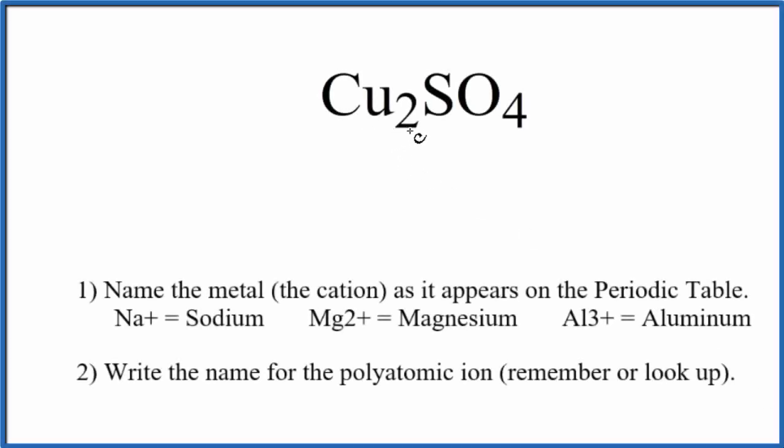To write the name for Cu2SO4, first we need to recognize this SO4 here. This is the sulfate ion. It's a polyatomic ion.